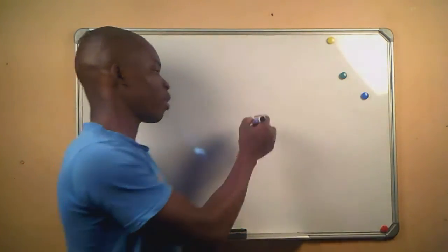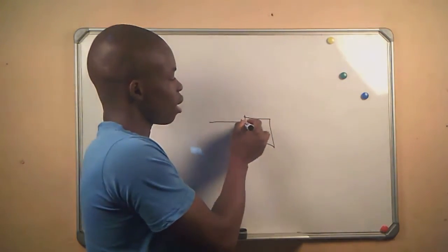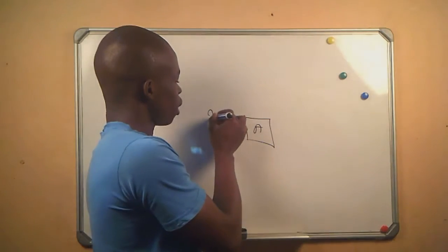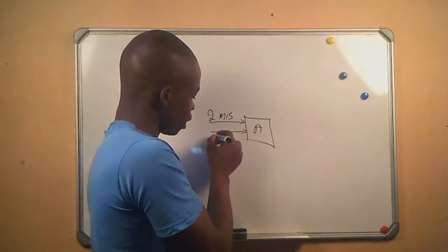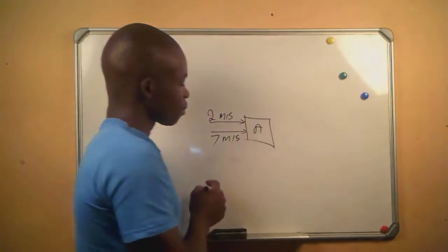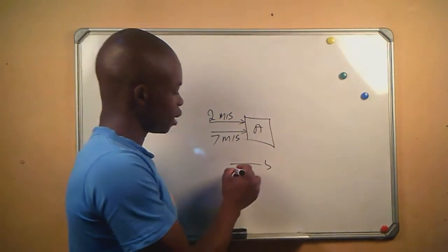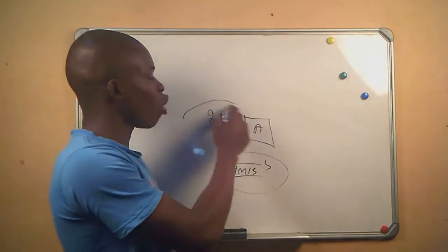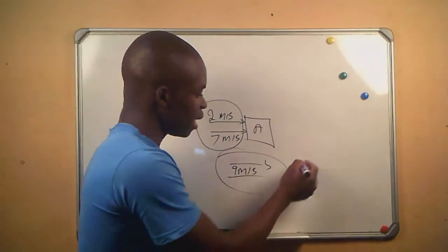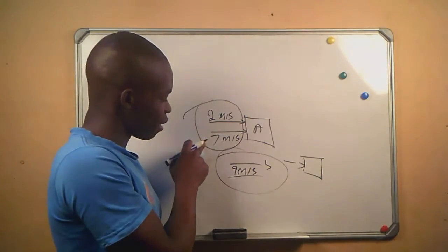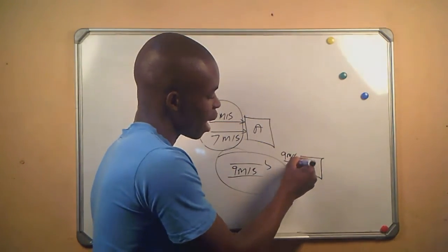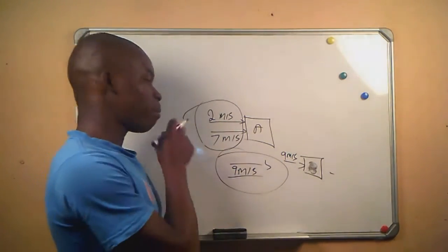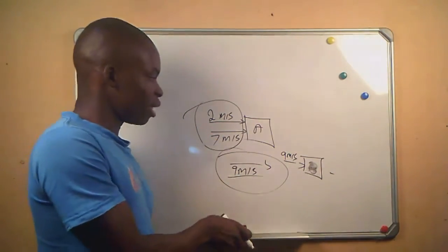Let's say we have an object — object A — and two velocities are acting on it. The first velocity is 2 meters per second, and the second is 7 meters per second. This block will be moving in that direction at 9 meters per second. Nine meters per second is the resultant of these two velocities, because we can replace the 2 and 7 meters per second with a single velocity of 9 meters per second and get the same results. Because they are moving in the same direction, we add them.